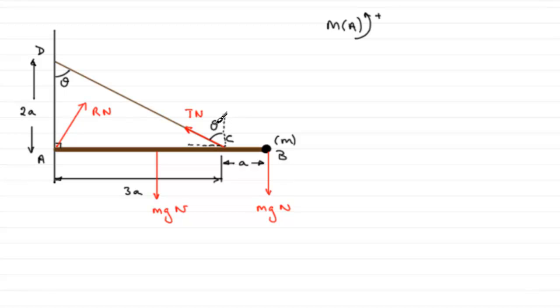When it comes to taking moments, we want this force which is going to turn it in an anti-clockwise sense, positive sense, and its moment will be T cos theta times the distance from C to A, which is going to be 3a. So we have T cos theta multiplied by that distance 3a.